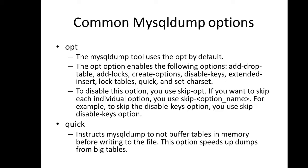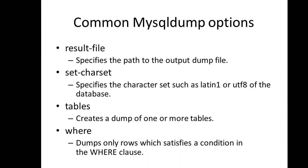To skip individual options, use --skip- followed by the option name. For example, to skip disable-keys, use --skip-disable-keys. The quick option instructs mysqldump not to buffer tables in memory before writing to file, speeding up dumps from large tables. The result-file option specifies the path of the output dump file. Set-charset specifies the character set such as latin1 or utf8. You can also specify individual tables to back up, or use the where option to dump only rows satisfying a condition.